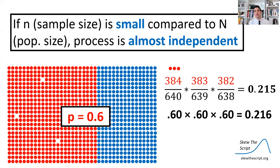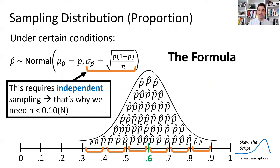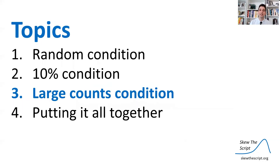So if the sample size is small compared to the population size, the process of sampling is almost independent — not quite, but almost. It turns out that to use the standard deviation formula, we need to assume independence in our sampling method. So in order to make sure that's roughly true, we need to ensure that our sample size n is less than one-tenth of the population size. We need to make sure our sample is small compared to the population.